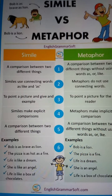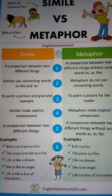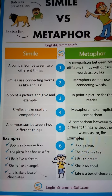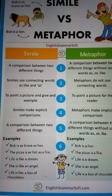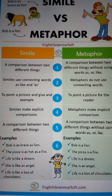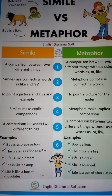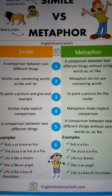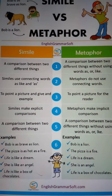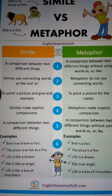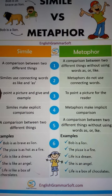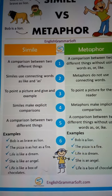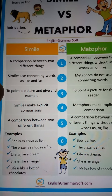Simile में connecting word 'as' या 'like' होता है, जबकि metaphors do not use connecting words. Simile में explicit comparison होती है, metaphors में implicit comparison होती है — comparison between two different things. Word 'as' और 'like' का example: 'Bob is as brave as a lion.'